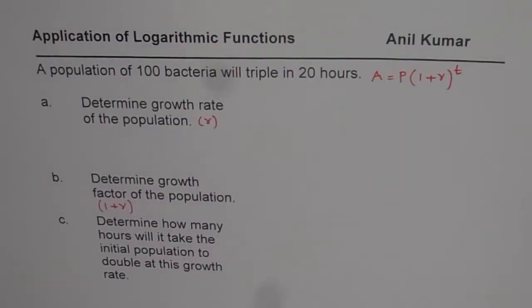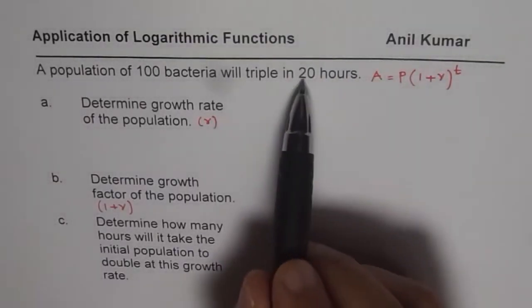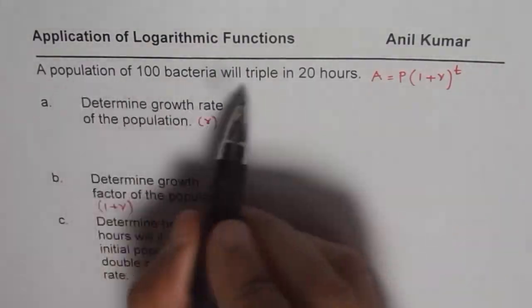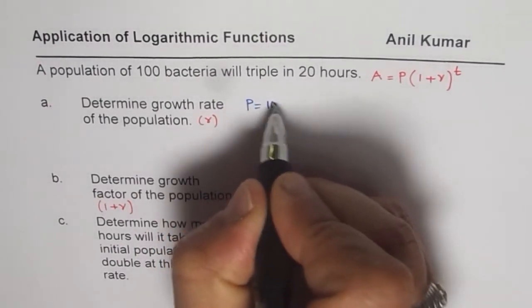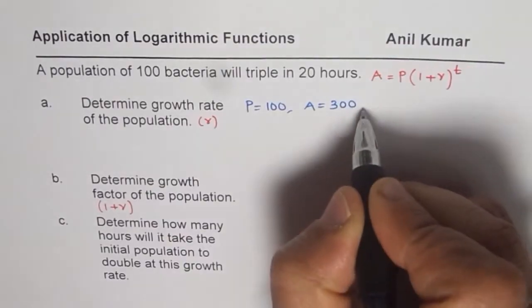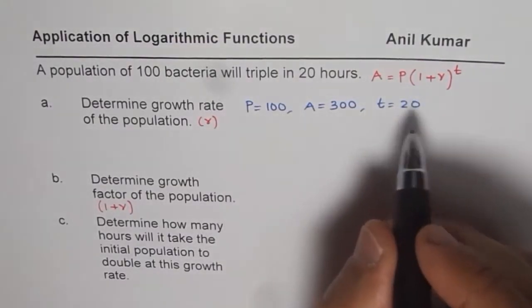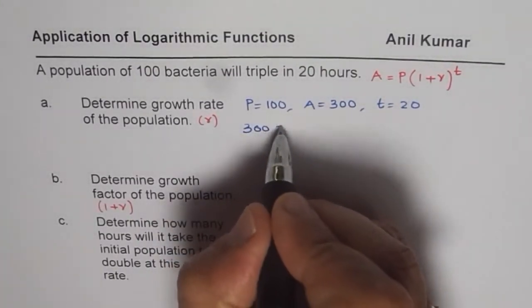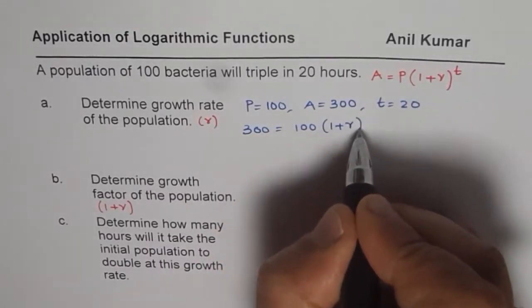Now let us do the calculations. So if we have to find, we are already given time t. And in this case, we know triple means 3 times. So we know that initial population P is 100, A is 3 times 100 which is 300, and t is 20 for us. So substitute these values to find what r is. So we can write 300 equals 100 times 1 plus r to the power of 20.